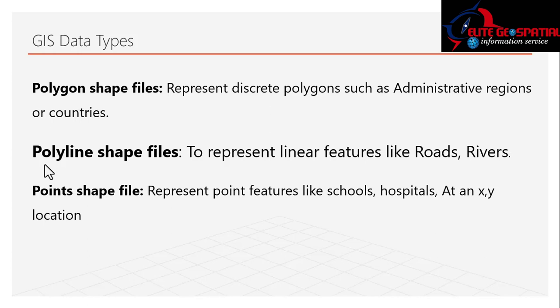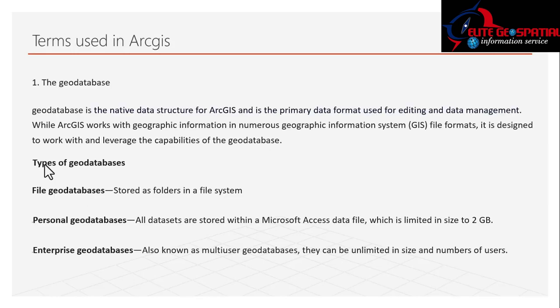These are terms you'll commonly hear in ArcGIS. First is the geodatabase. The geodatabase is the native data structure for ArcGIS and is the primary data format used for editing and data management. While ArcGIS works with many GIS file formats, it is designed to leverage the capability of the geodatabase.